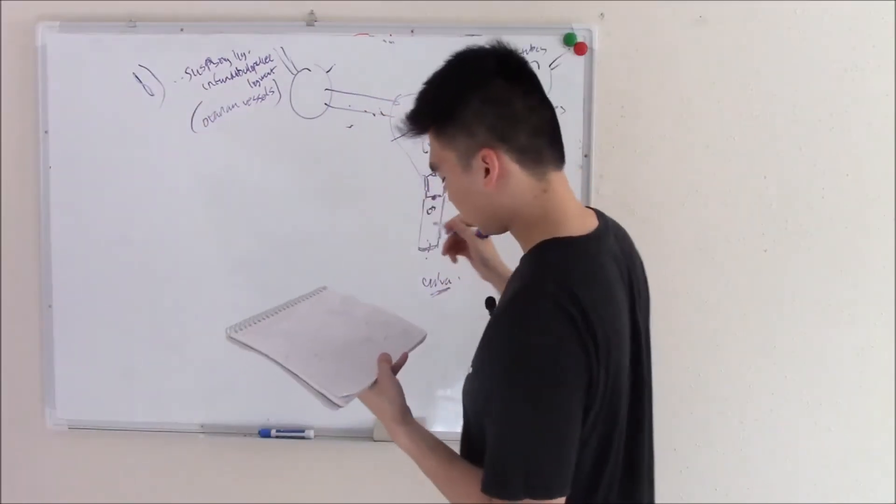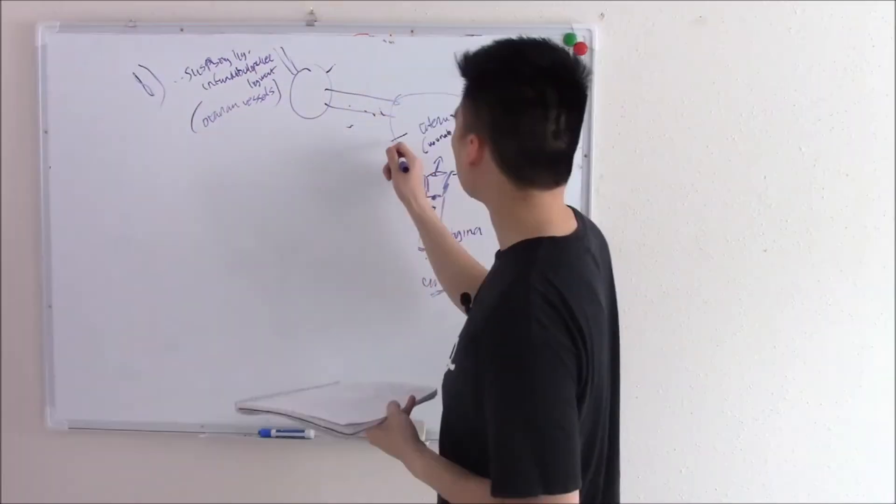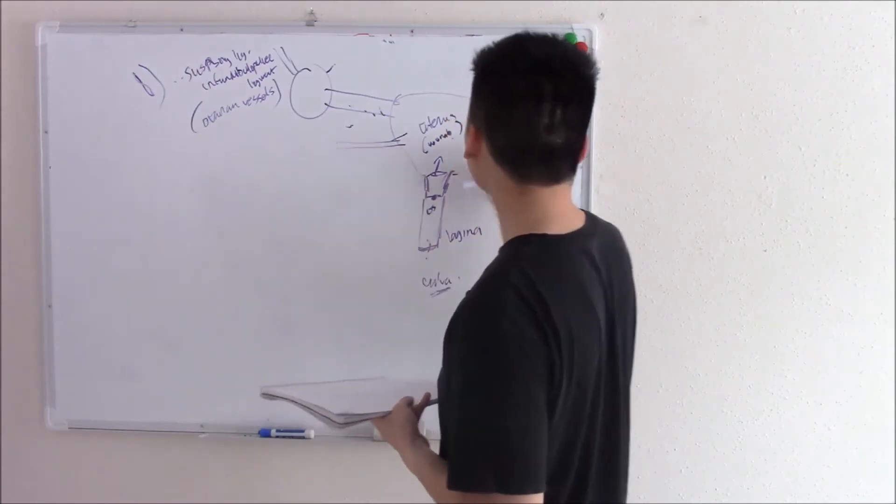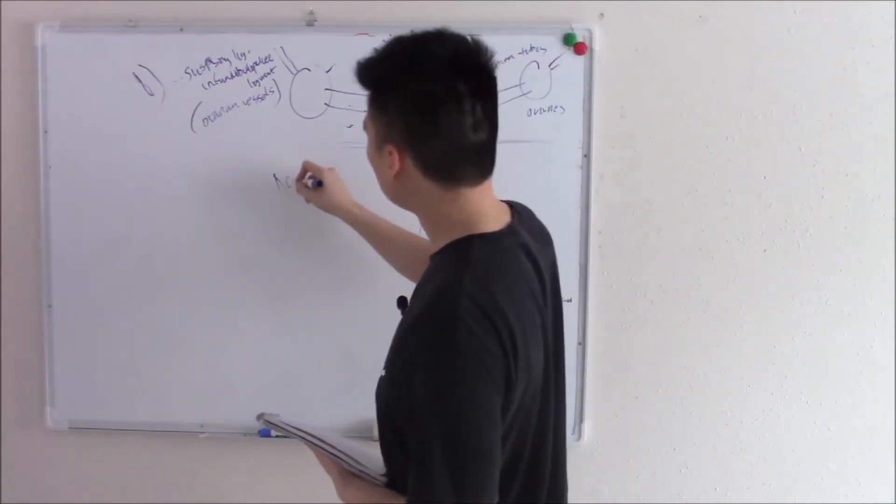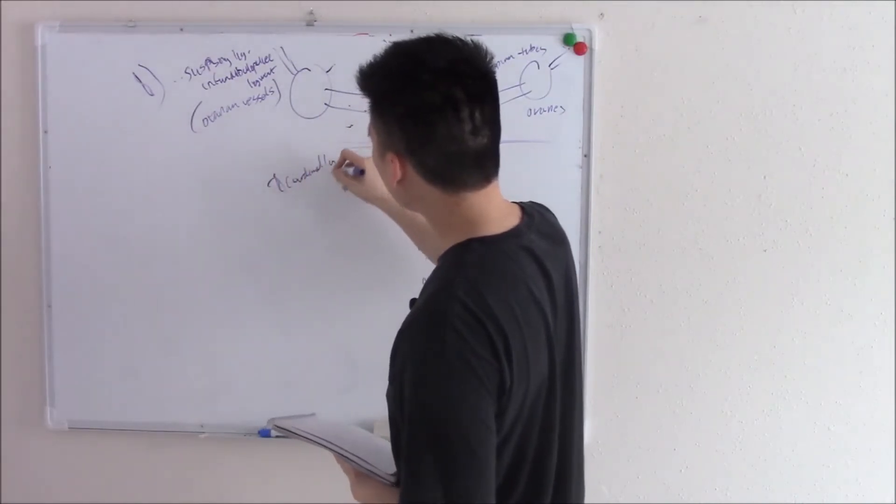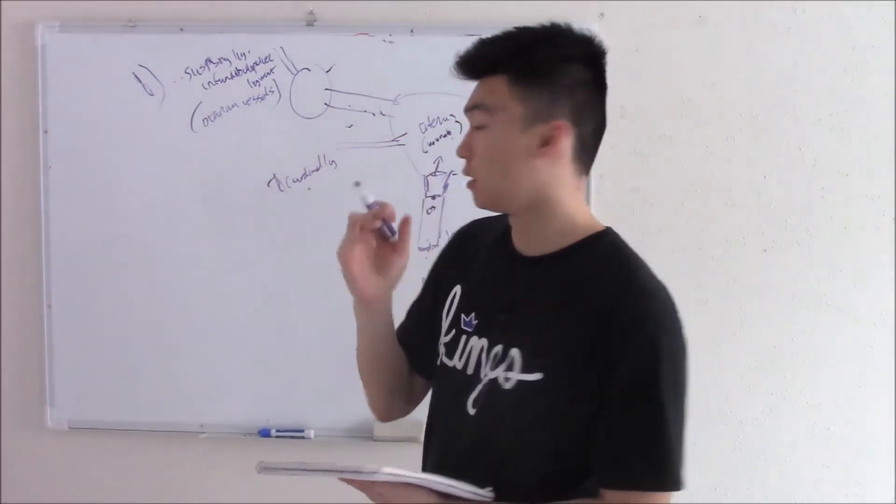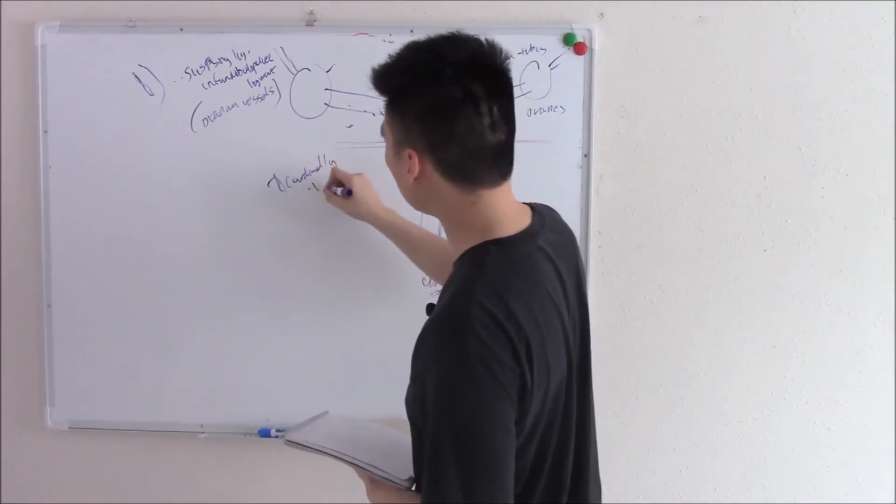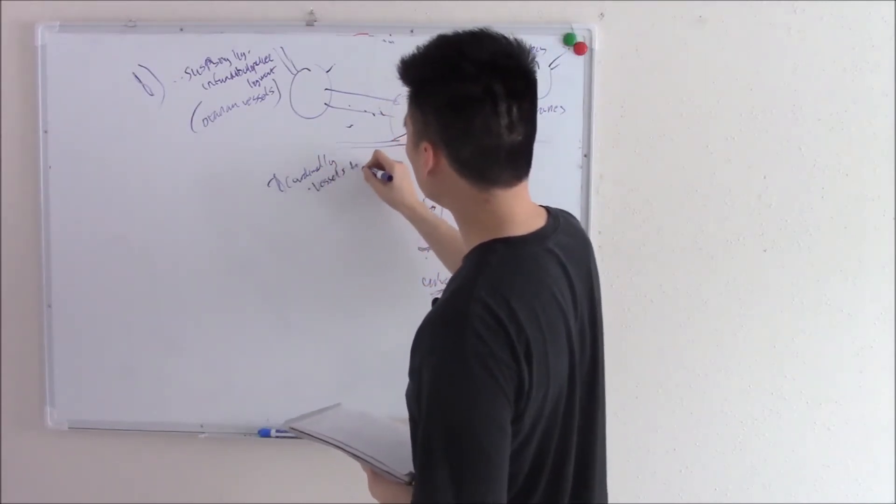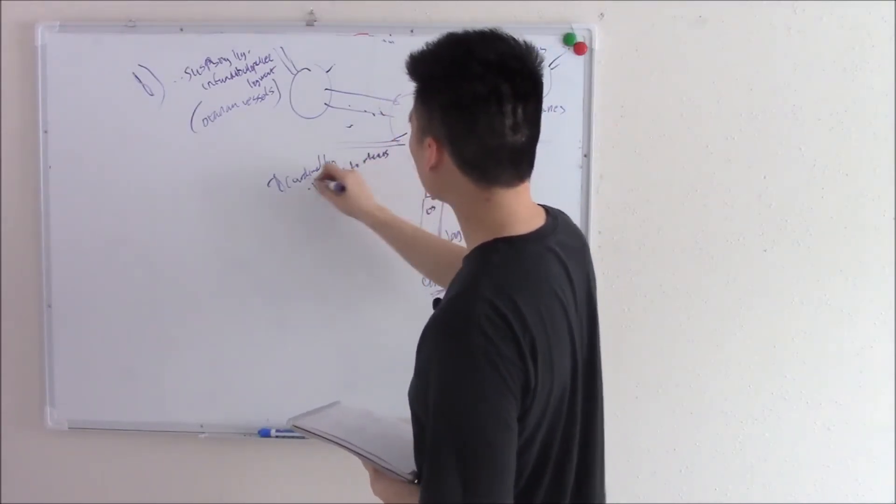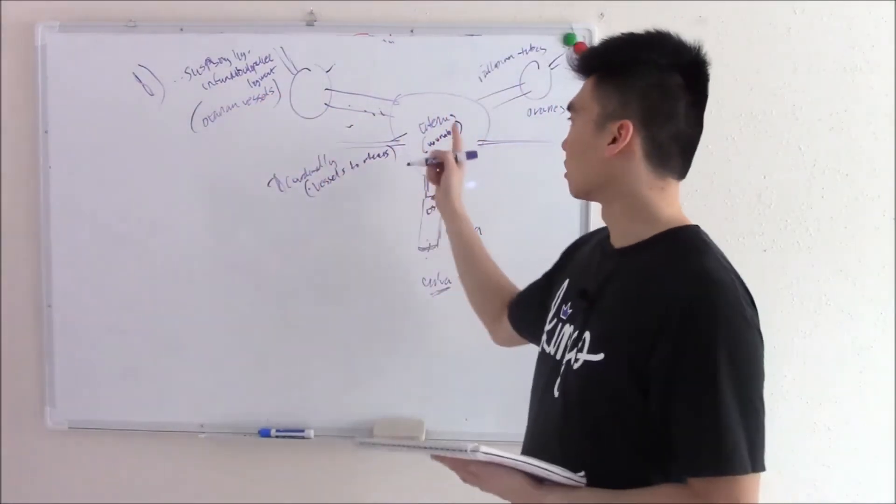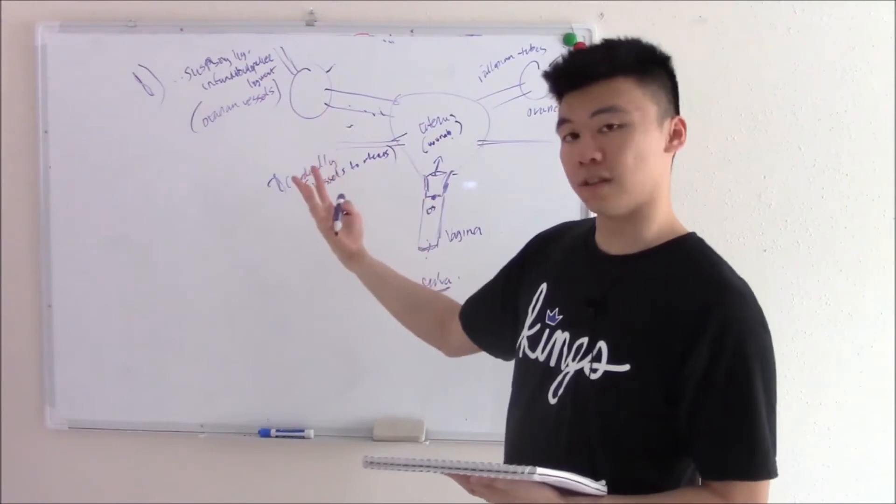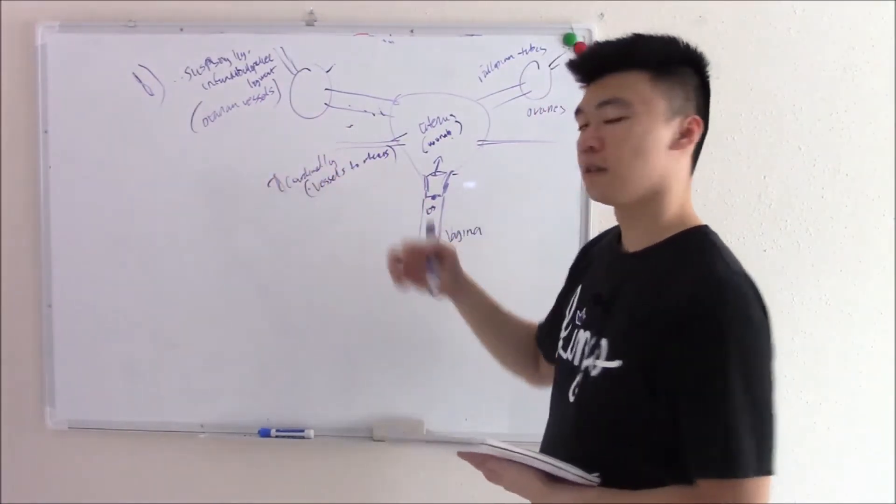So there are two of them and this is the first one. Second one is your cardinal ligament, which connects your uterus to the side wall. Your cardinal ligament contains your uterine vessels, the vessels to your uterus. You absolutely need to know these two because they hold your ovaries and your uterus in place and they contain the vessels to your ovary and your uterus.